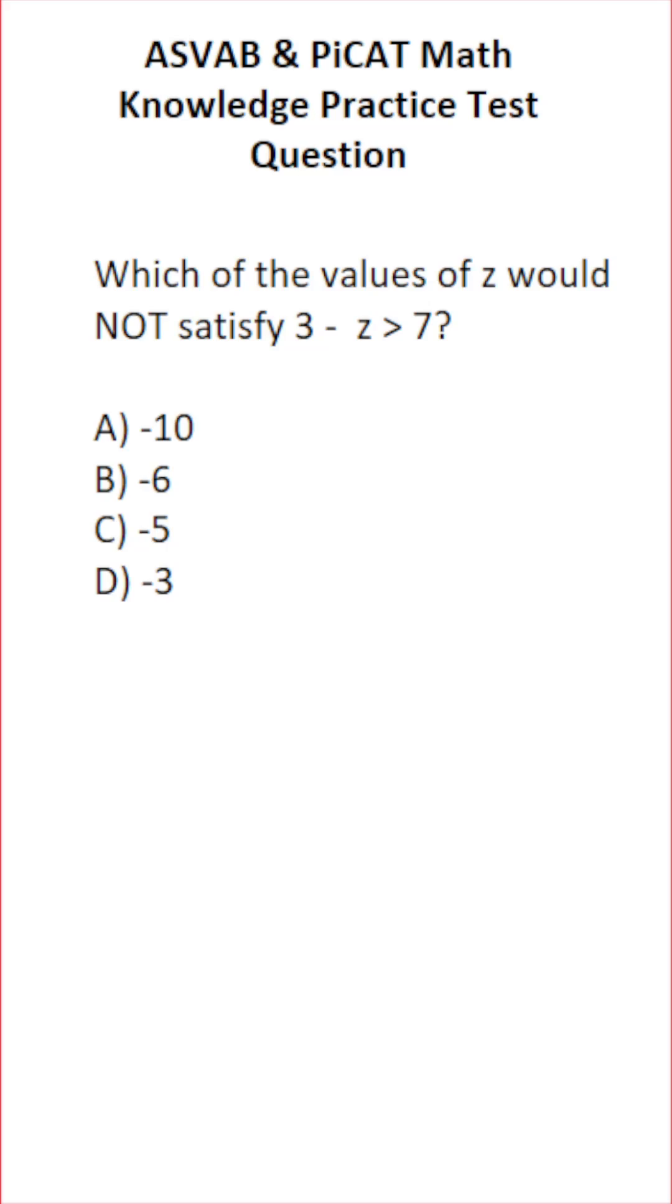So let's solve this inequality algebraically for z. We have three minus z greater than seven. To get started, we're gonna get z by itself by subtracting three from both sides.